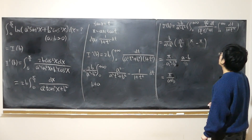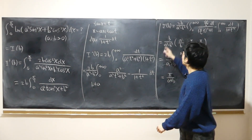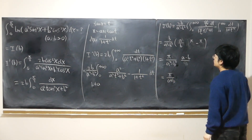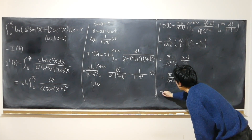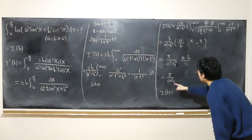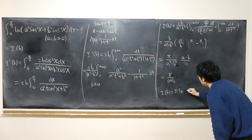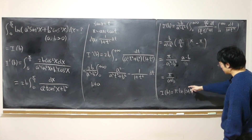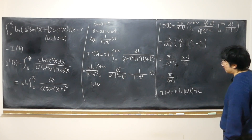So this is the value of I'(b). What is the antiderivative? Since b is the unknown, and π is a constant, the antiderivative is π·log(a + b) + C. Since a and b are both positive, (a + b) is already positive so we don't need the absolute value. We now determine C.